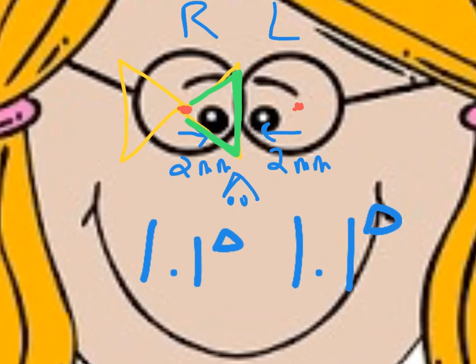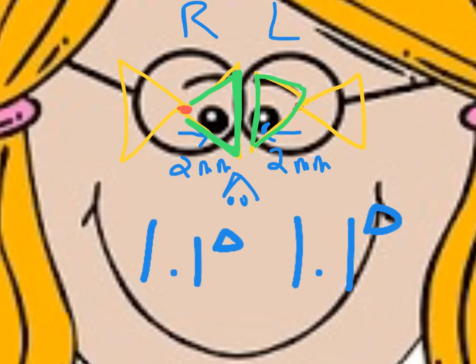Similarly in the left eye, the same thing applies with the two prisms stacked apex to apex. Again, you focus on this prism, and again you see that it is 1.1 prism diopters base in, because the base is inwards towards the nose. So in the right eye: 1.1 prism diopters base in. In the left eye: 1.1 prism diopters base in.